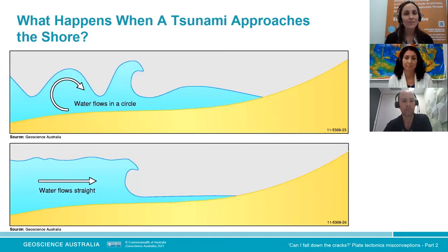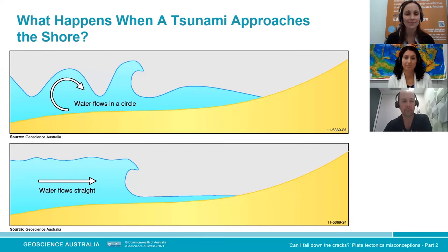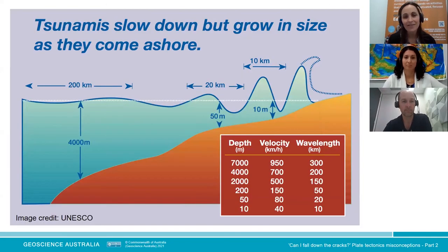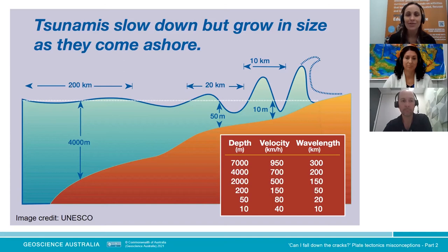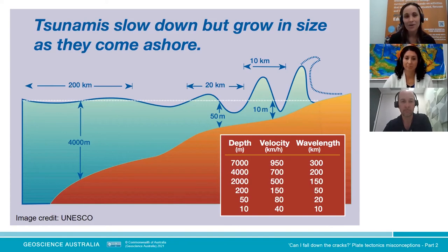When a normal wave approaches shore, its energy moves in circular motion and the wave crests and crashes — that's the kind of wave you can surf, giving nice faces and cresting. A tsunami is different — the water flows straight in, we don't get circular motion and we don't get that cresting. The friction of the tsunami wave on the seabed causes the front to slow down, the back catches up, the wavelength gets shorter but the wave gets taller. So what could be a relatively small wave in the ocean grows in size as it comes into shore.